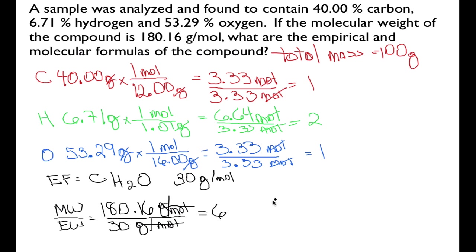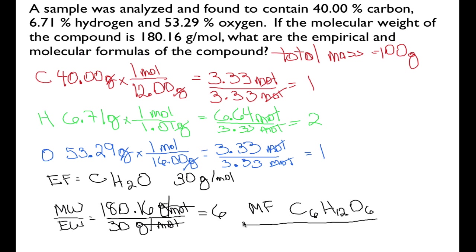That 6 tells us that in our molecular formula we have 6 empirical formula units. Our empirical formula is CH₂O, so we multiply it by 6 to get our molecular formula: C₆H₁₂O₆. We know this because we compared the molecular weight to the empirical formula weight, so we multiply our empirical formula by 6 to get the molecular formula.